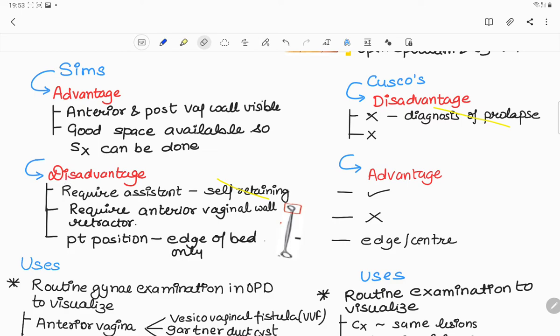On the other hand, there are some disadvantages of SIMS over Cusco's. Number one, it requires an assistant because it is non-self-retaining. It is used with anterior vaginal wall retractor and patient is examined both at edge as well as center of the bed.